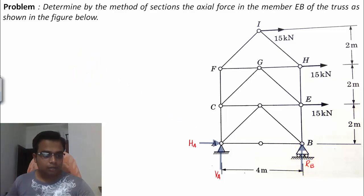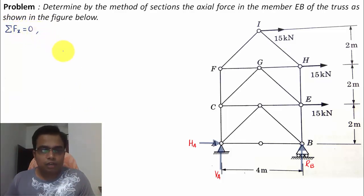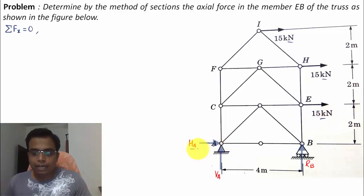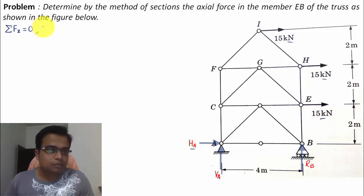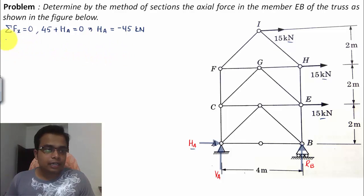I'm going to use the equations of equilibrium. Starting with the first one: summation of forces in the x-direction equals zero. The horizontal forces are 15, 15, and 15, plus HA. So 15 plus 15 plus 15 is 45, giving us HA equals negative 45 kilonewtons.